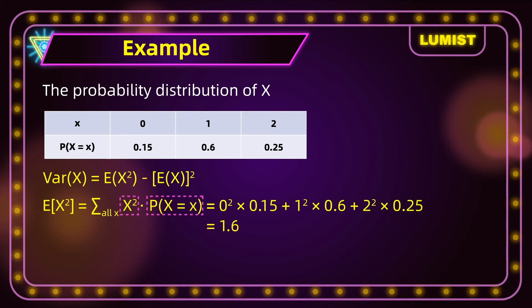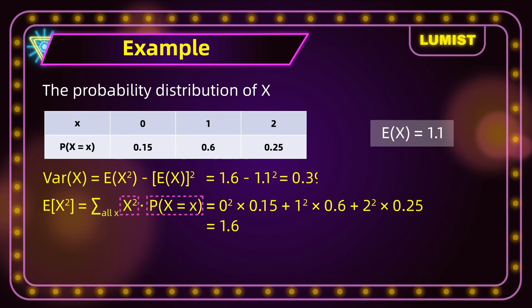We also know from earlier that E[x] = 1.1. So the variance equals 1.6 − 1.1² = 1.6 − 1.21 = 0.39, which is exactly what we got earlier. So this method works.